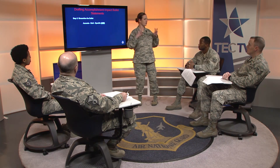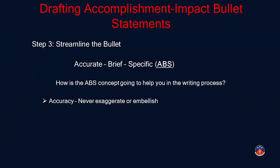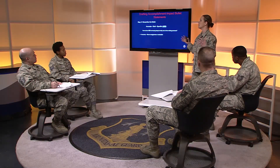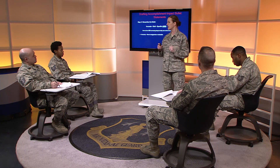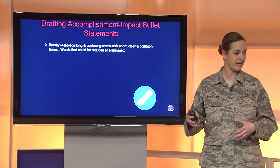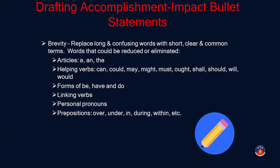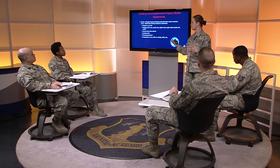Will all that information fit on one line? No. So we streamline the bullet using the acronym ABS — just like in fitness, keep it tight. ABS stands for Accurate, Brief, and Specific. Being accurate means not embellishing — stick to the facts and core values. Not everyone is walking on water. Being brief, or brevity, means removing pronouns and extra words because it's not a sentence. Replace long words like 'automobile' with 'car' to gain characters back and better highlight the accomplishment.